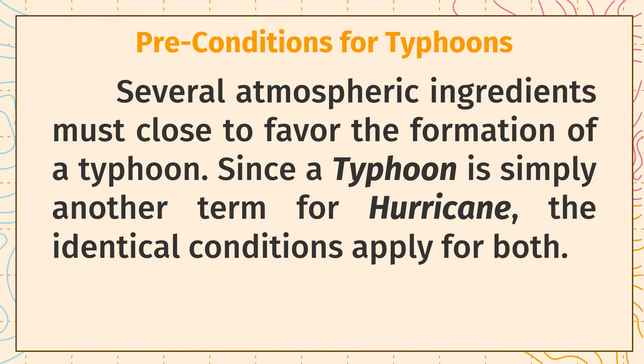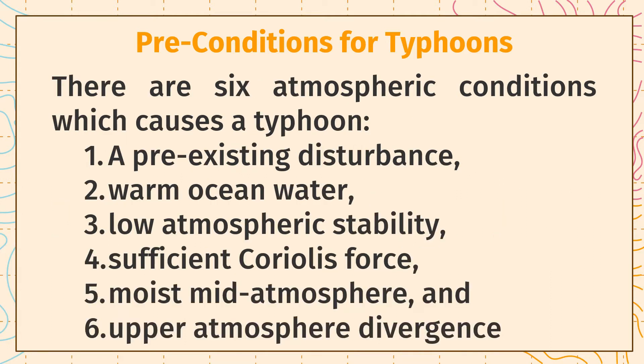Here are the preconditions for typhoons. Several atmospheric ingredients must combine to favor the formation of a typhoon. Since a typhoon is simply another term for a hurricane, identical conditions apply for both. Here are the six atmospheric conditions which cause a typhoon: 1. A pre-existing disturbance. 2. Warm ocean water. 3. Low atmospheric stability. 4. Sufficient Coriolis force. 5. Moist mid-atmosphere. 6. Upper atmosphere divergence.